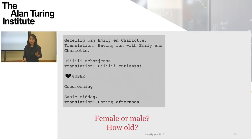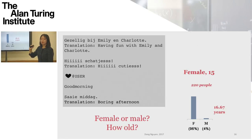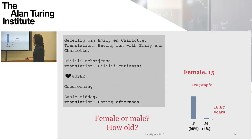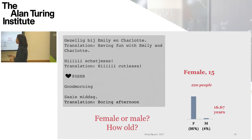The audience guessed female, 24 and female, 16. The actual answer was female, 15. We asked this to 220 people — 96% of them guessed female, and on average they guessed 16.7 years. So this is an example that with just a few tweets you can already get a pretty good estimate of the background of this person. This is a really maybe easy example, but it's just to illustrate the task.